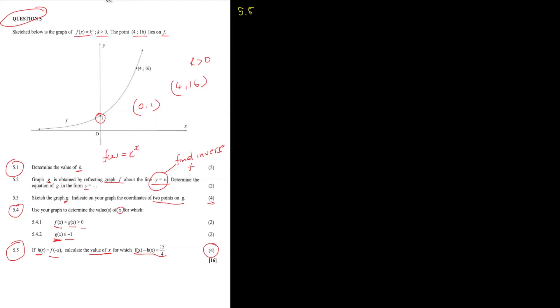Question 5.5 (4 marks): given that h(x) = f(−x), calculate the value of x for which f(x) − h(x) = 15/4. These questions seem complicated but are not — you just write what they say and solve. Since h(x) = f(−x), and f(x) = 2^x, you replace x with −x to get h(x) = 2^(−x). That understanding is already worth a mark.